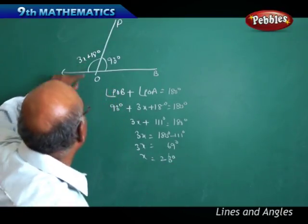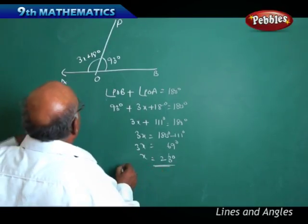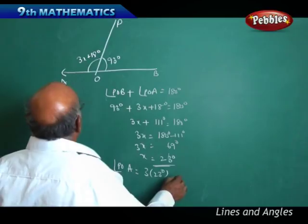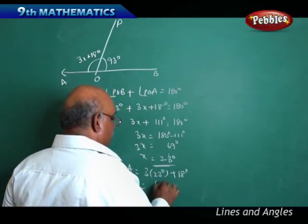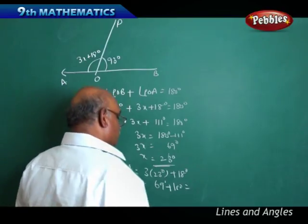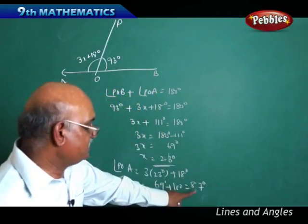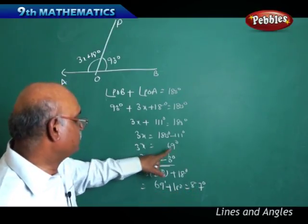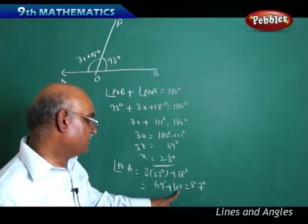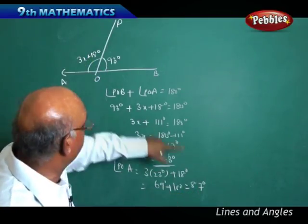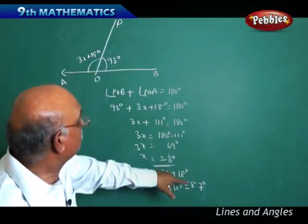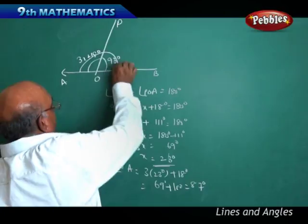When X equals 23 degrees, angle POA equals 3 times 23 plus 18, which is 69 plus 18 equals 87 degrees. Verification: 87 degrees plus 93 degrees equals 180 degrees. Therefore the total angle is 180 degrees.